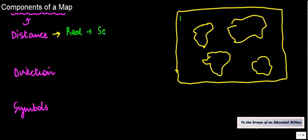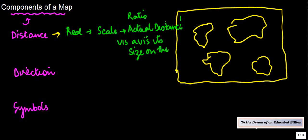So every map has something called a scale. A scale basically represents the ratio of actual distance vis-à-vis its size on the map. What does this mean? So let's say, for example, these are two places, A and B.